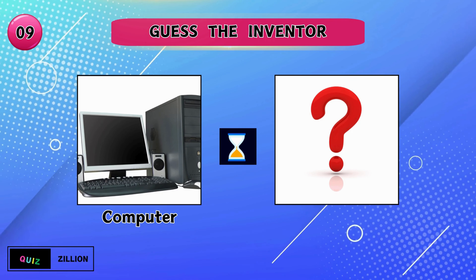Who designed the disposable diaper? The disposable diaper was found by Marion Donovan. Who innovated the electric shaver? The electric shaver was found by Jacob Schick.